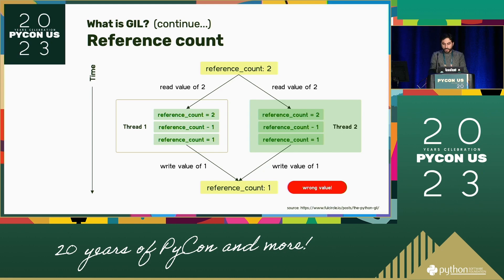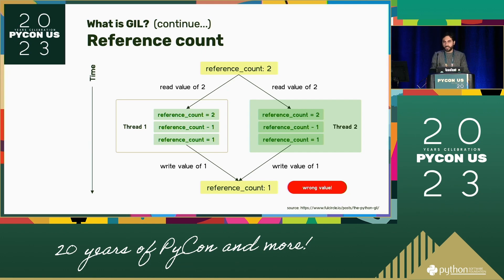What is reference counting? Basically, for every variable that Python stores in memory, it also stores a tally of how many objects are referencing that variable. As long as the reference count for any variable is greater than zero, Python will keep that variable around. When that number hits zero — meaning no more objects need that variable — the garbage collector removes the object from memory automatically. That's why people say you may not need to call a garbage collector explicitly, because Python does it for you anyway.